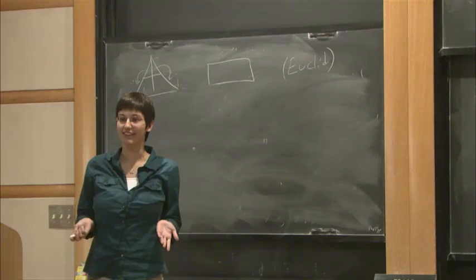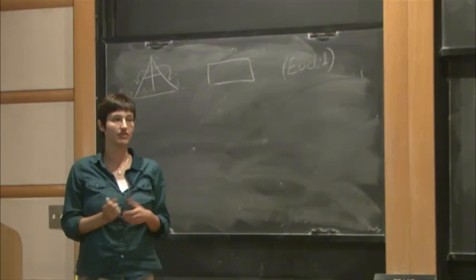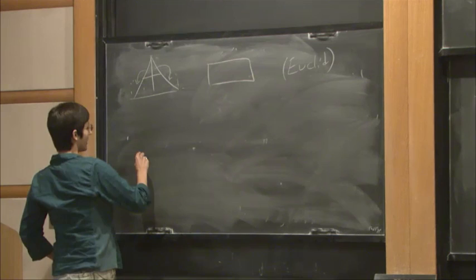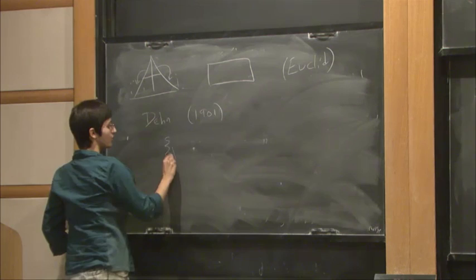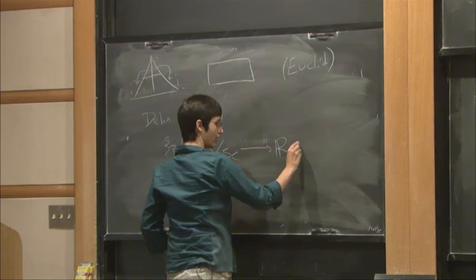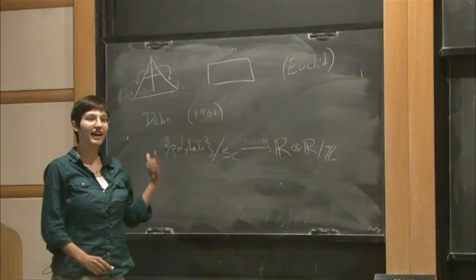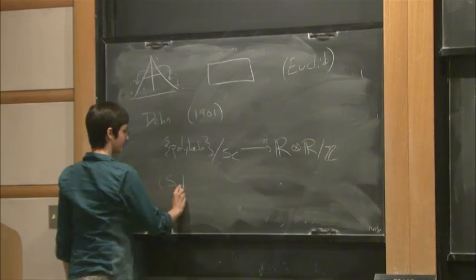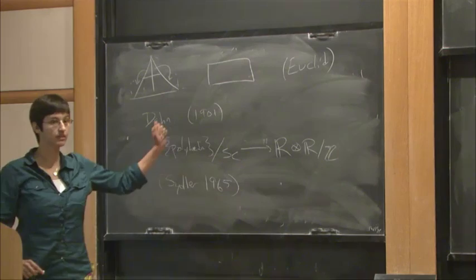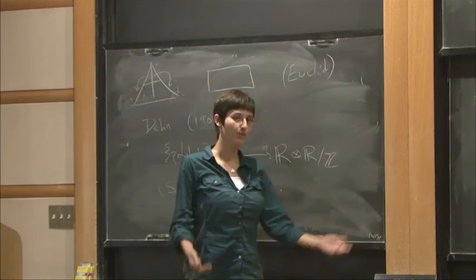The next question is, what about polyhedra? When are two polyhedra with the same volume — when can you cut one up and rearrange it into the other one? It turns out that volume is not the only invariant. There's a second invariant called the Dehn invariant, constructed by Dehn in 1901, which goes from the set of polyhedra up to scissors congruence to R tensored with R mod Z, where the tensor product is over Z. And this turns out to be the only invariant — this is due to Sydler in 1965 — so volume and the Dehn invariant together.